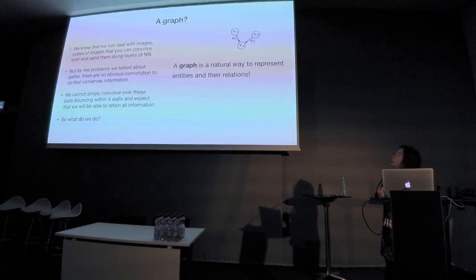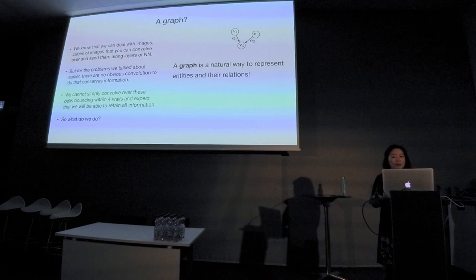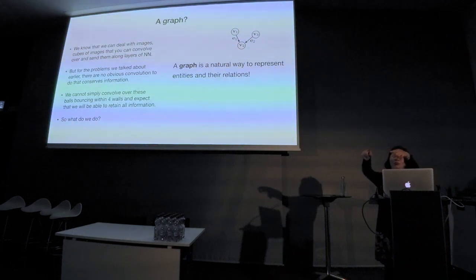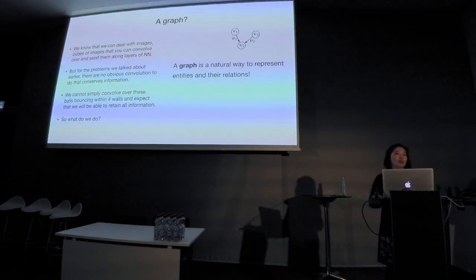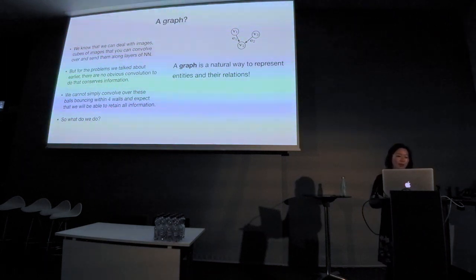So what do we do? We're going to use a graph — it's a natural way to represent entities and relations. If Danilo is in the audience, he's the person you should really talk to about graph neural nets. He's one of the main authors of Interaction Networks, which we're going to use in our work here.